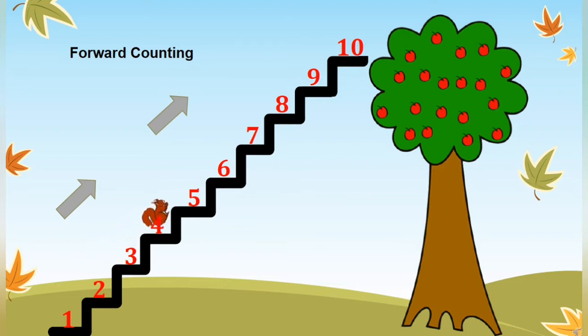What comes after 3? 4, then 5, 6, 7, 8, 9, and 10. And here, squirrel reaches to the apples. When we count 1 to 10, we go in forward direction. That is why we call it forward counting.